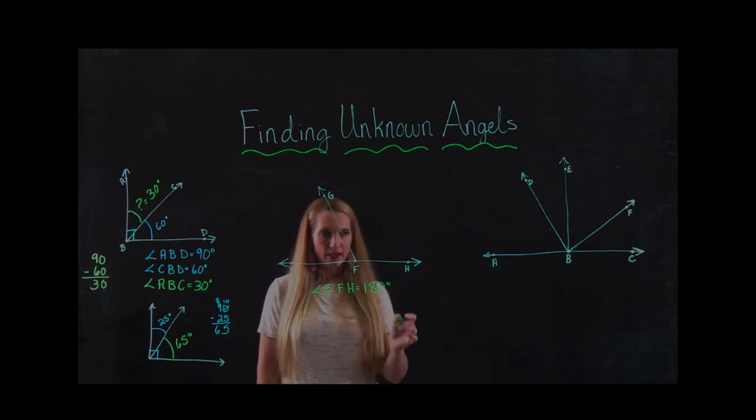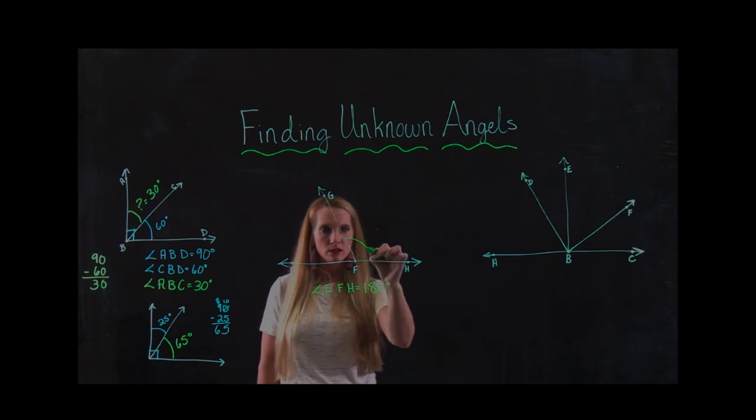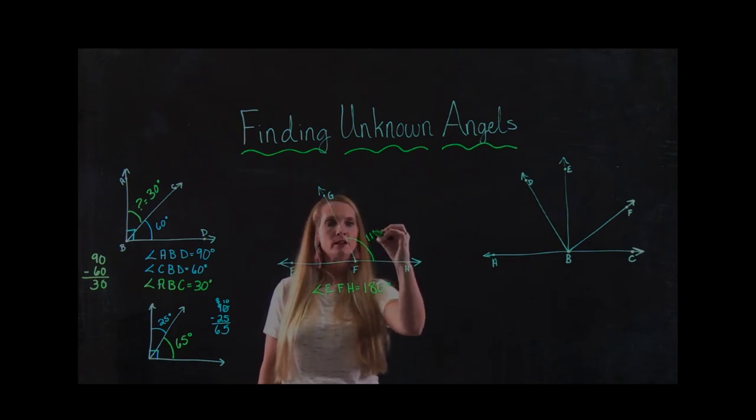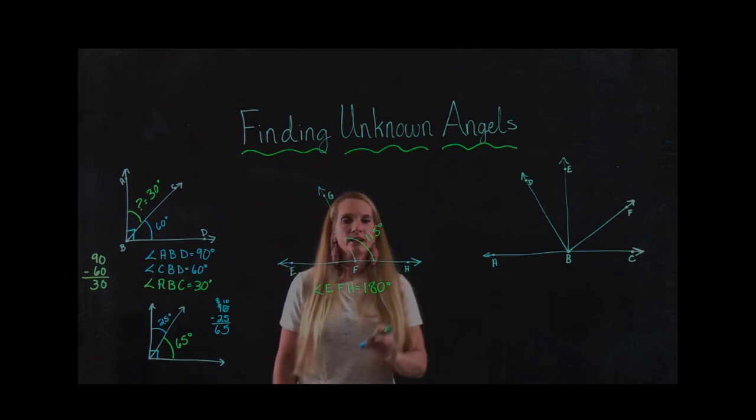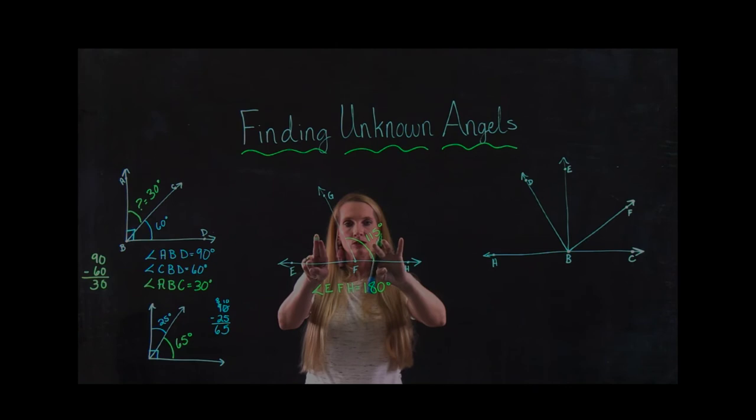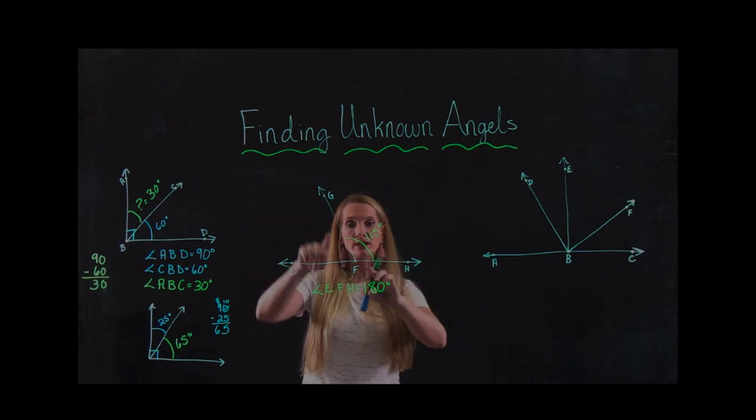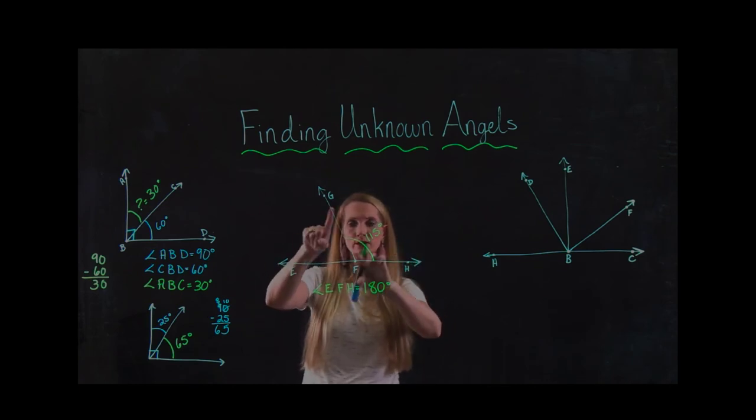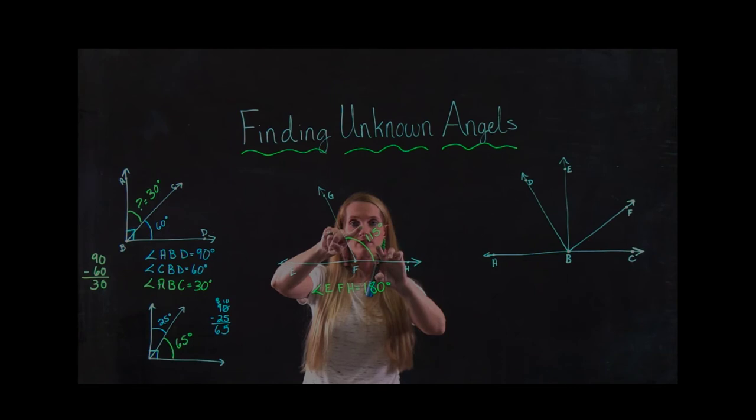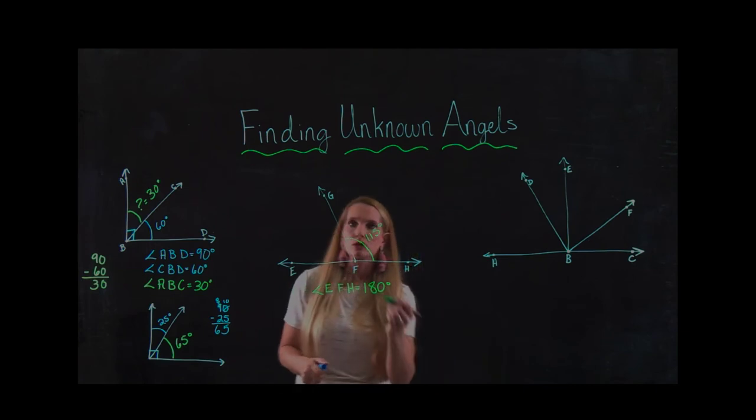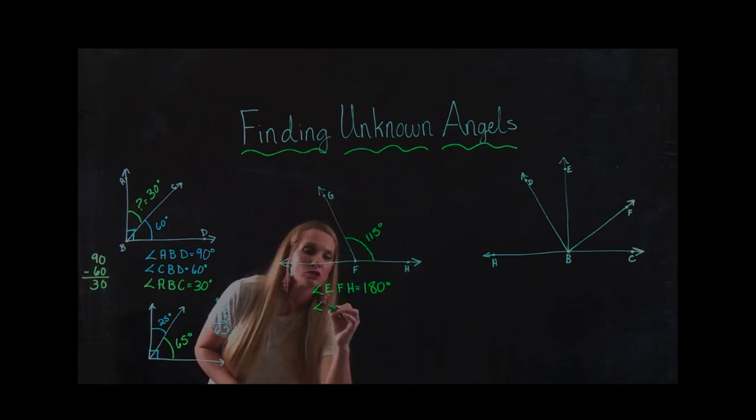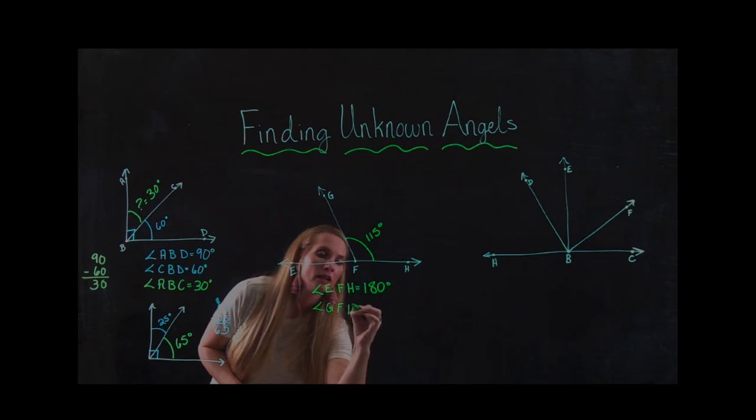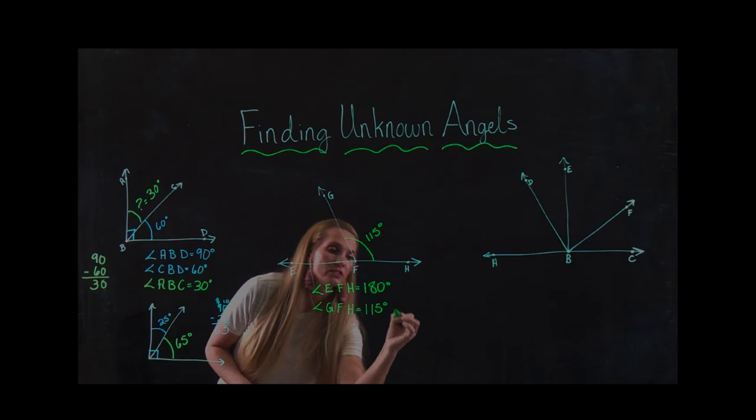And they also gave me that this big angle here was 115 degrees. Now, how did I know it went here instead of here? Well, I looked at the number 115, and I know it's got to be greater than 90. So this angle here is greater than 90. This one here is smaller than 90. So if they're giving me one of the angles, even if I didn't have numbers or letters on this, I would know this one has to be the 115 because this is my obtuse angle.